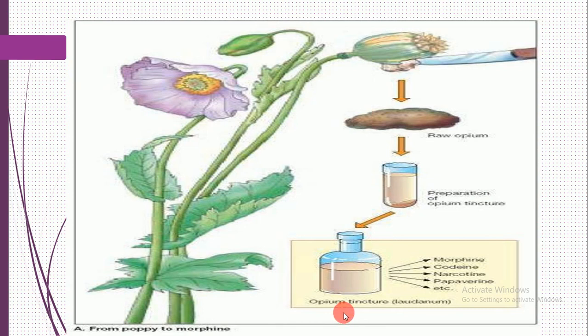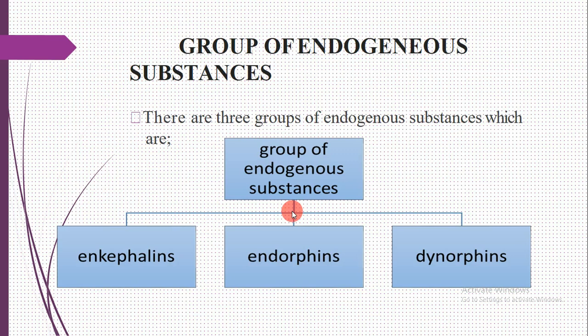Opium tinctures contain morphine, codeine, narcotine, and papaverine, among others. These are opiums derived from the poppy plant. I will discuss from poppy to morphine in more detail in a future lecture.